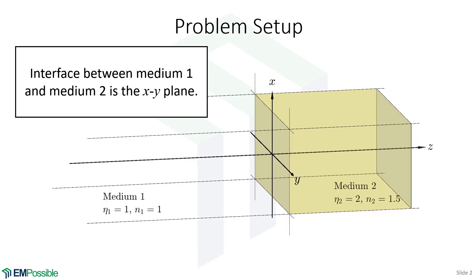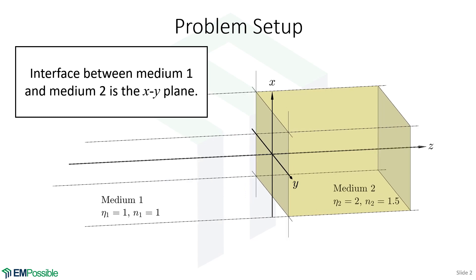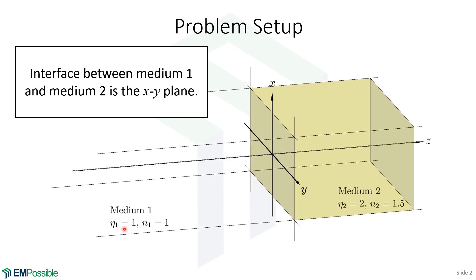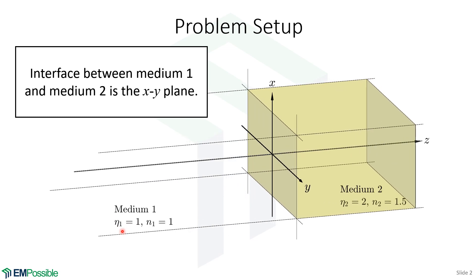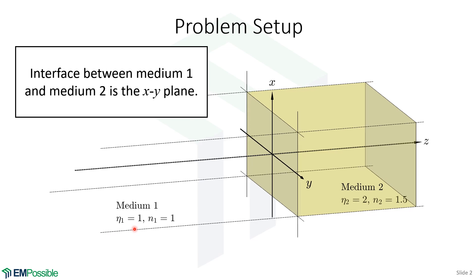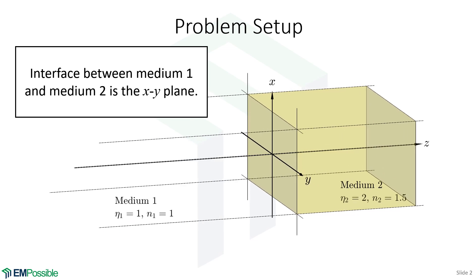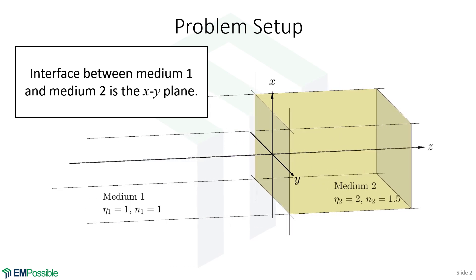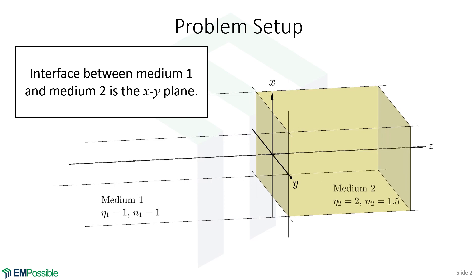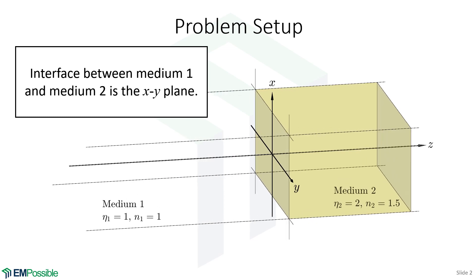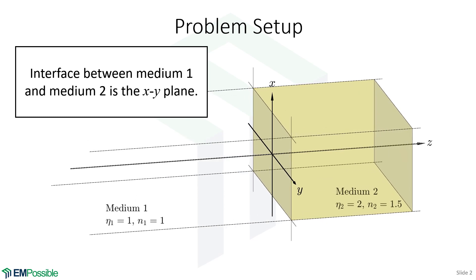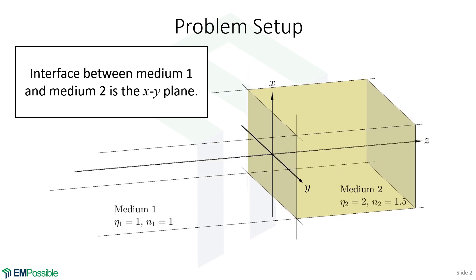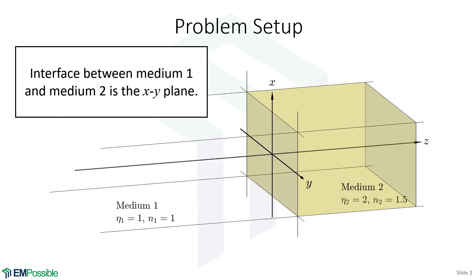We're going to describe our materials with two different parameters. The first one is the impedance. Remember what the impedance does — it describes the balance between the electric and magnetic fields. So if the impedance is one, the electric and magnetic fields will be the same amplitude.